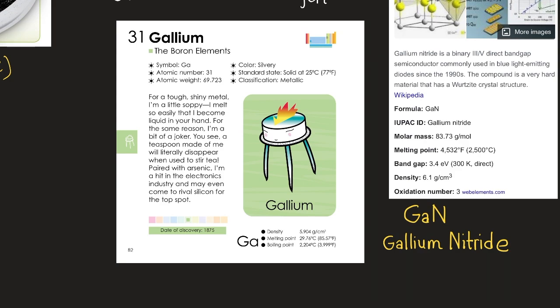Gallium's native discovery was in 1875, its density is 5.904 grams per centimeters cubed. Its melting point is 29.76 degrees Celsius or 85.57 degrees Fahrenheit. Its boiling point is 2204 degrees Celsius or 3999 degrees Fahrenheit.